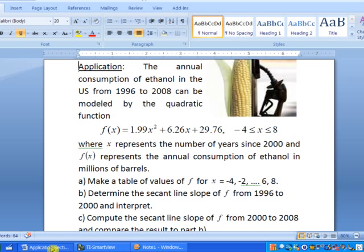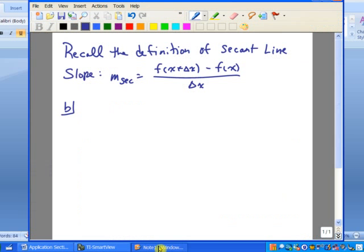Part B says to determine the secant line slope of f from 1996 to 2000 and interpret. Okay, so in this case, x equals negative 4, and delta x, the change in x, is 2000 minus 1996, which is 4.